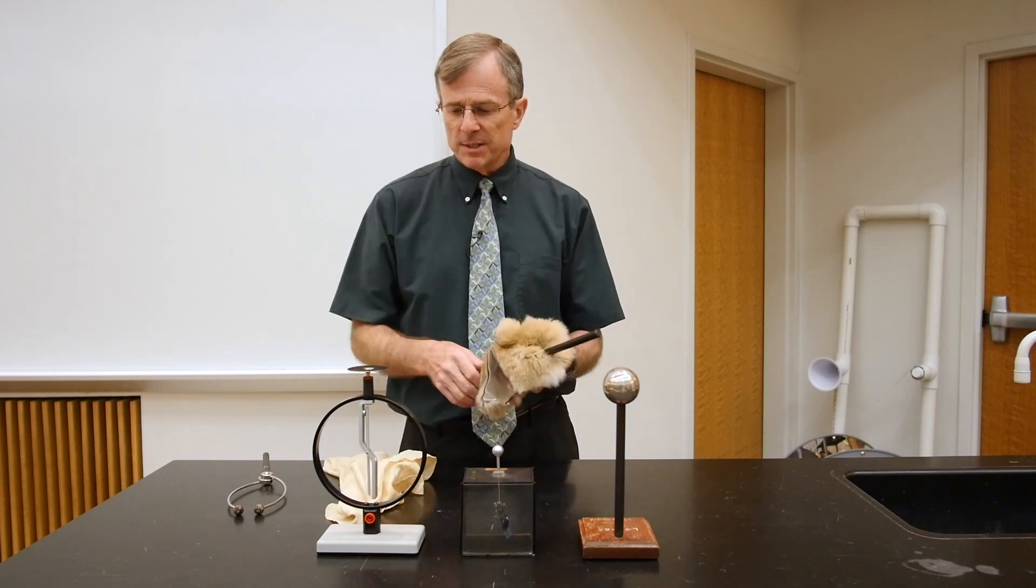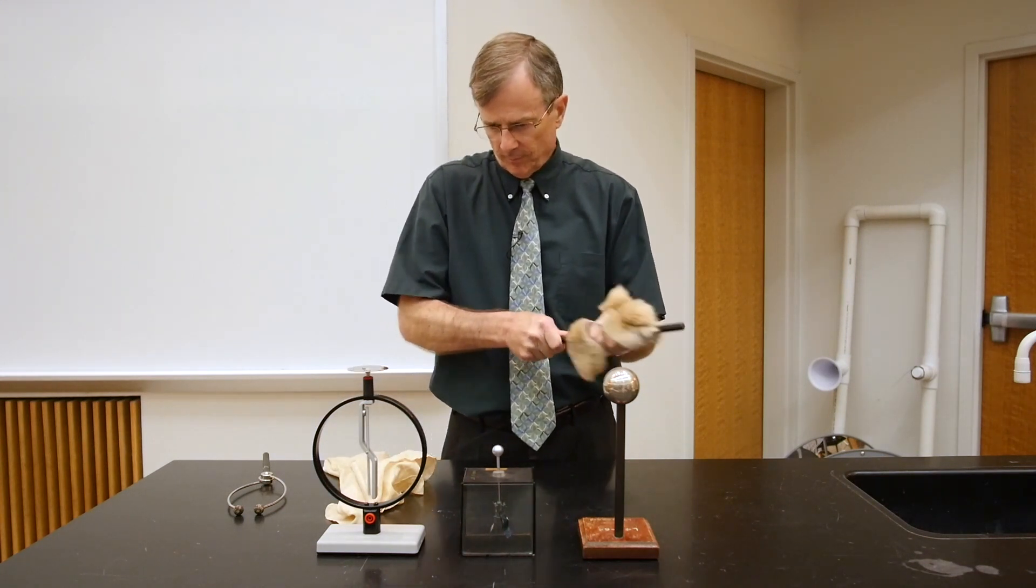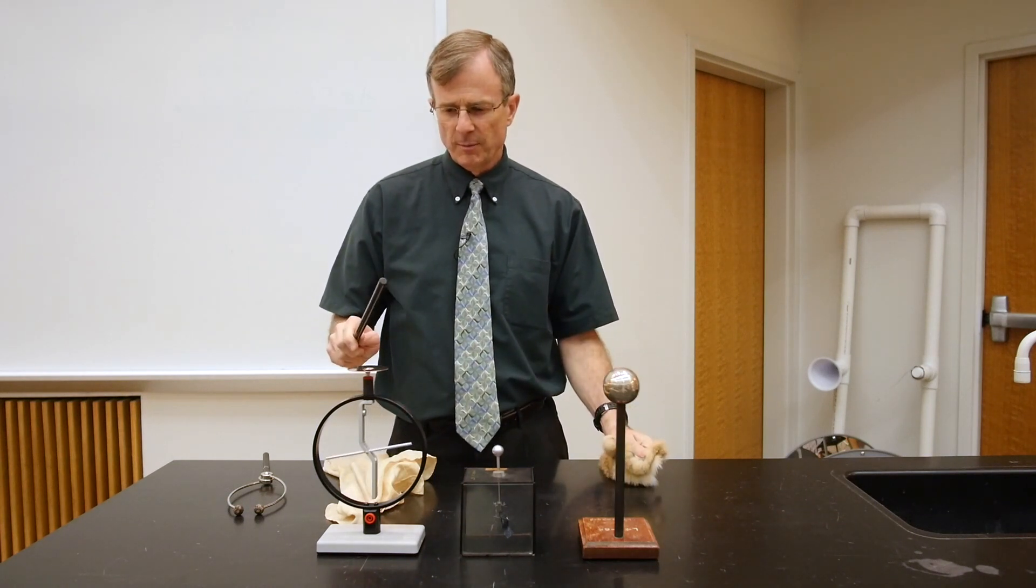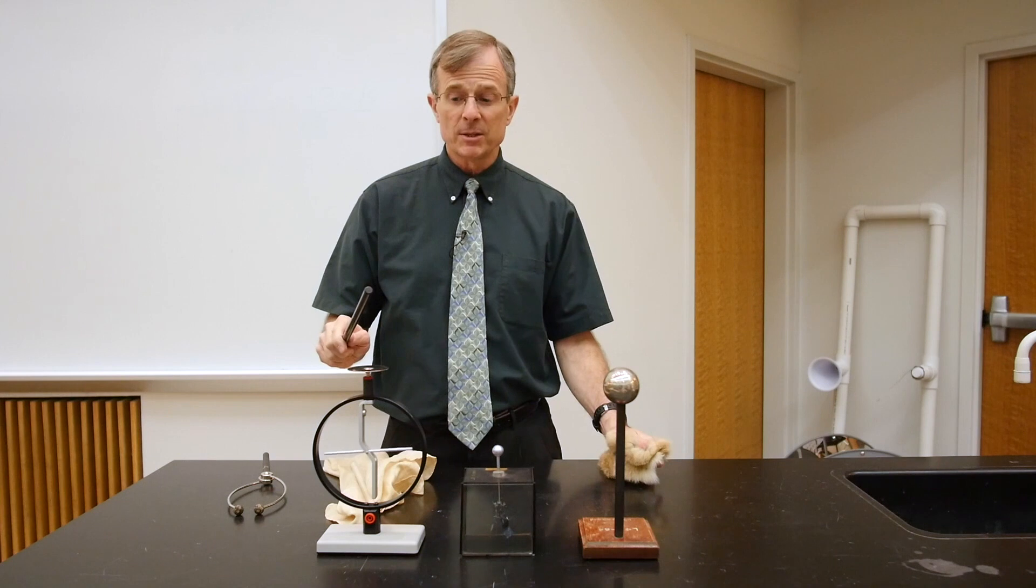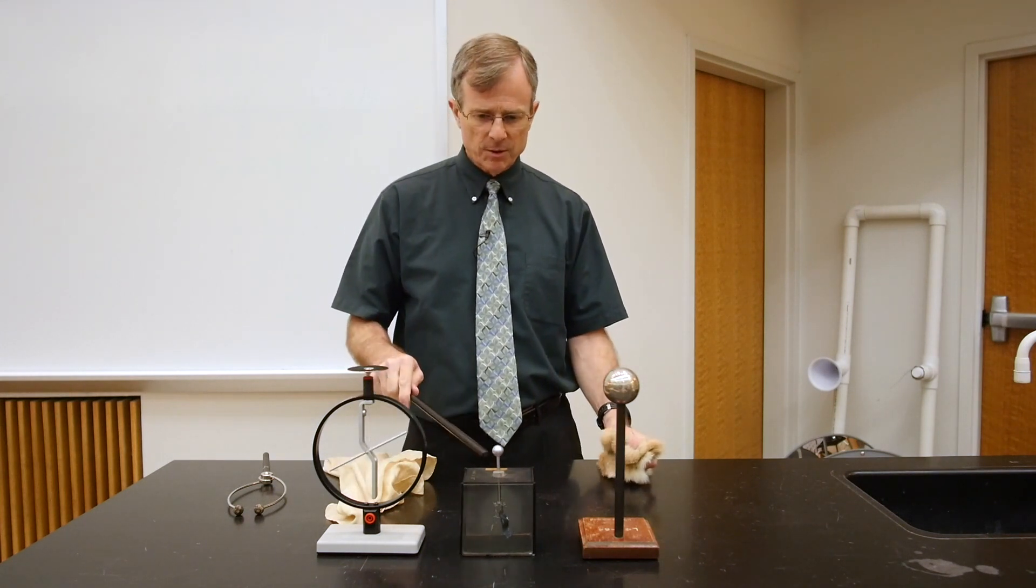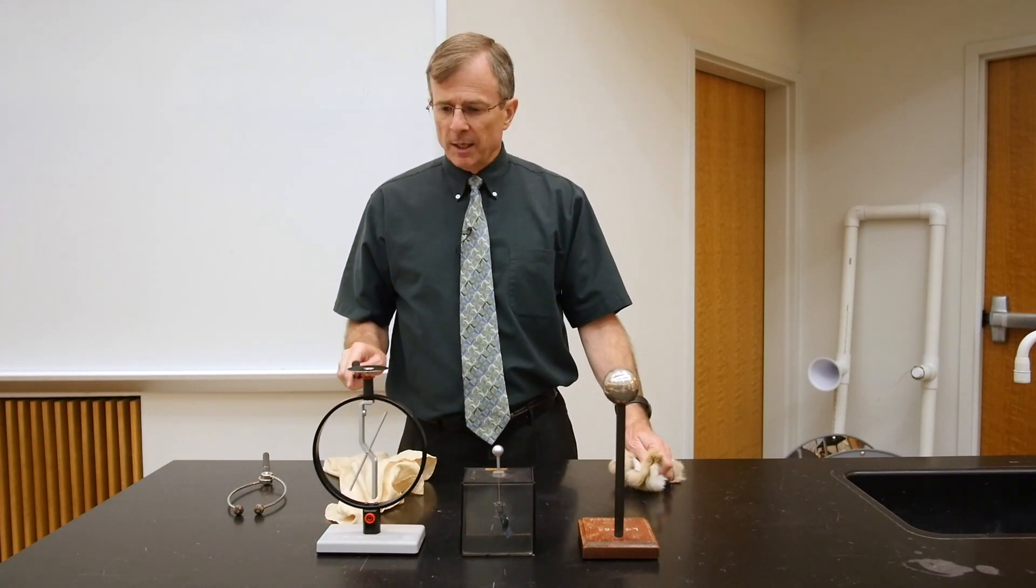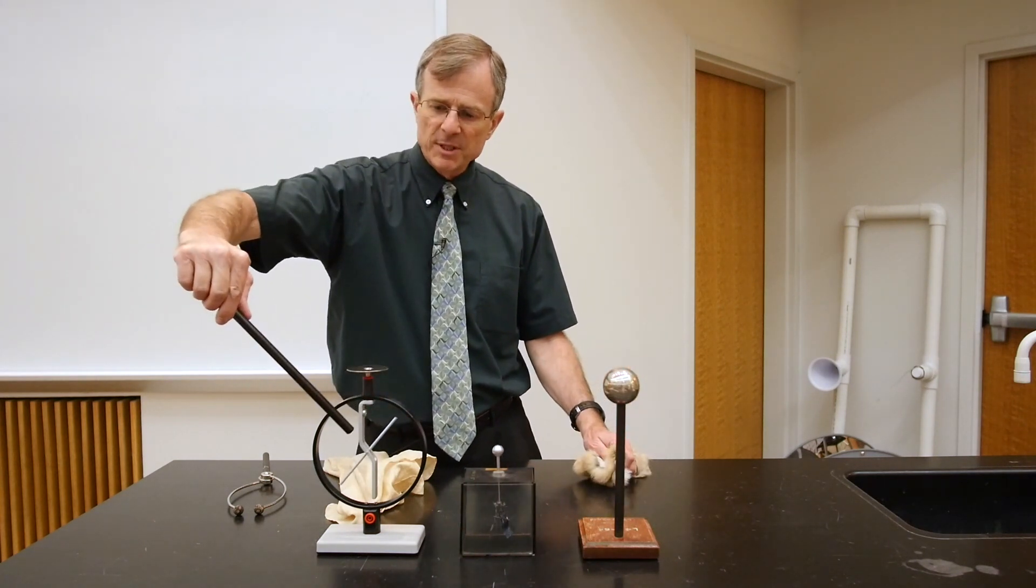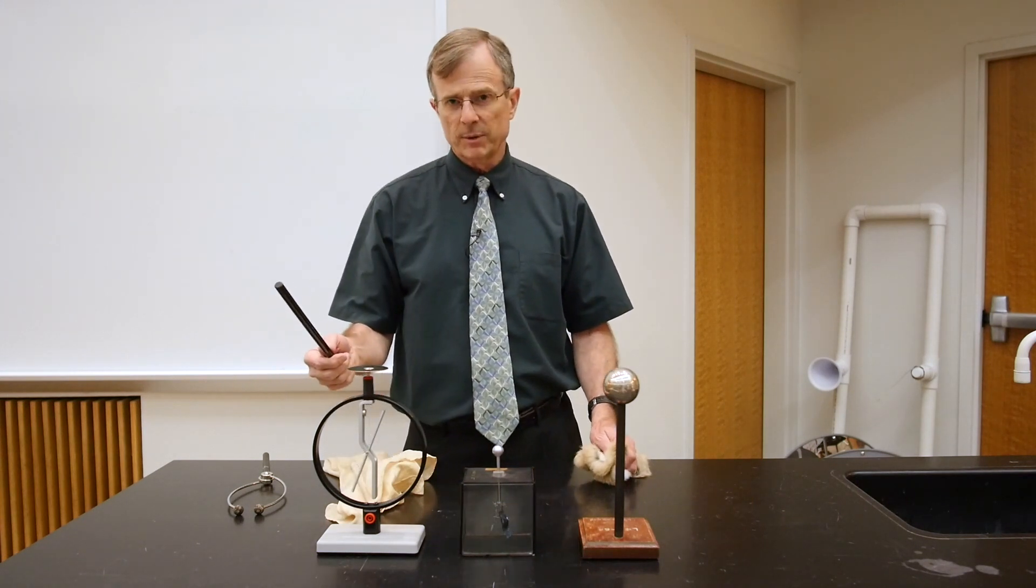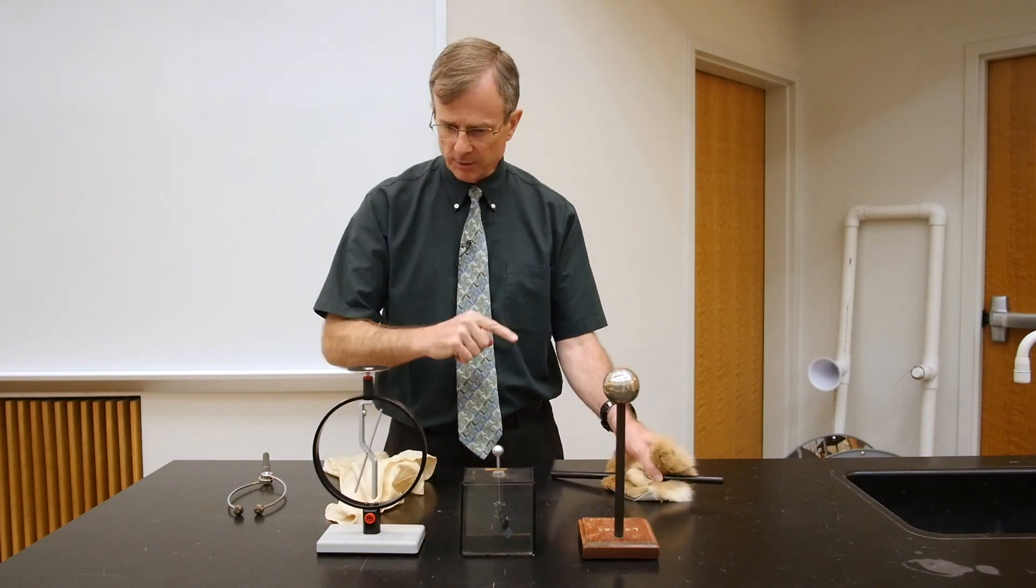You can also use a very sensitive brawn electroscope to measure minute amounts of charge. And basically, this is doing the same thing that the two pieces of aluminum foil were doing. But in this case, you have a piece of metal here and metal here, both with the same charge repelling each other, and causing the needle to shift.